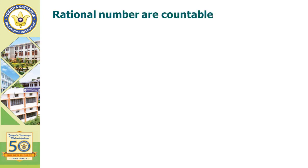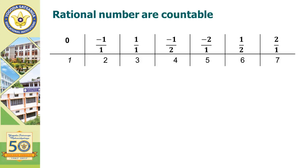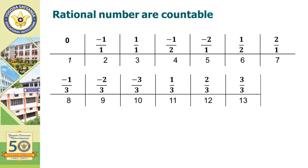Rational numbers are also countable. Rational numbers are those numbers which can be represented in the form p/q, where p and q are integers and q is not equal to 0. Each number has a unique value.